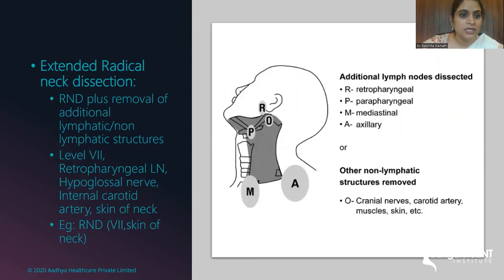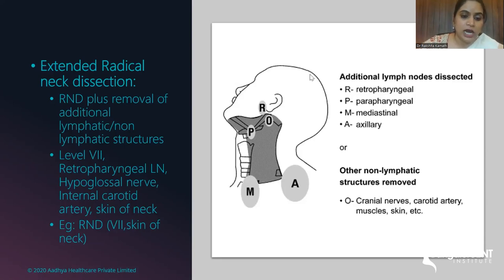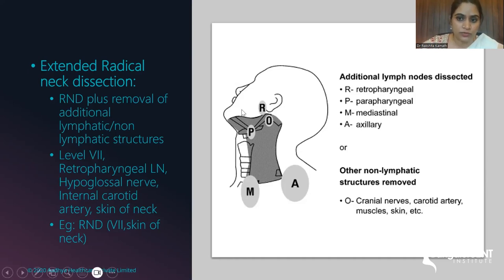Extended radical neck dissection has very few indications. It involves radical neck dissection plus removal of additional lymphatic or non-lymphatic structures such as level 7 lymph nodes, retropharyngeal lymph nodes, hypoglossal nerve, internal carotid artery, or involved neck skin. It is notated as RND with brackets denoting removed structures: R for retropharyngeal, P for parapharyngeal, M for mediastinal, A for axillary, plus non-lymphatic structures such as cranial nerves, carotid artery, muscles, and skin.